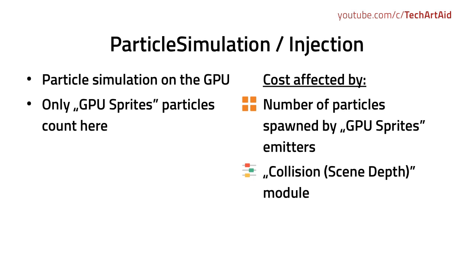Particle Simulation and Injection: only GPU sprite particle simulation cost is calculated here, so only if you enabled GPU sprites in your particle emitter will it affect this pass. The cost is affected by the number of particles spawned by such emitters, and by whether you enabled the collision module — because collision with GPU sprites is calculated from screen space data. The bigger the amount of particles that have to collide, the bigger the cost of this pass. Remember you can use particle level of detail to manage the amount of particles being spawned.